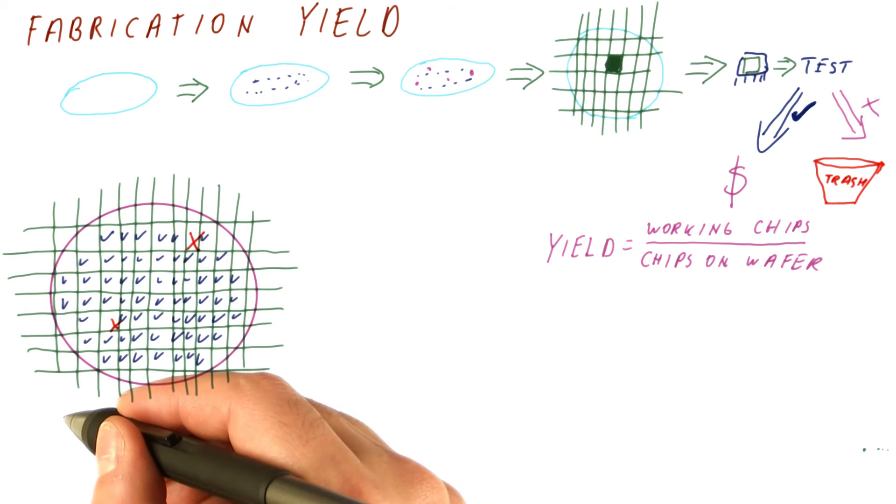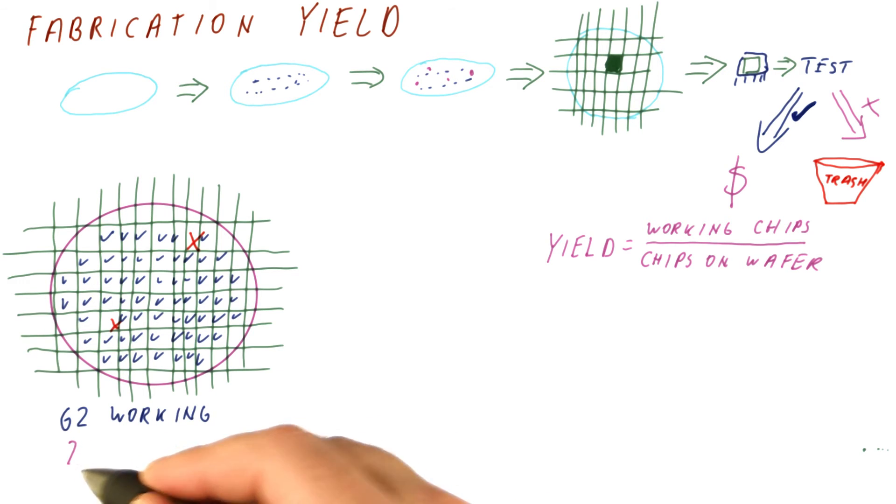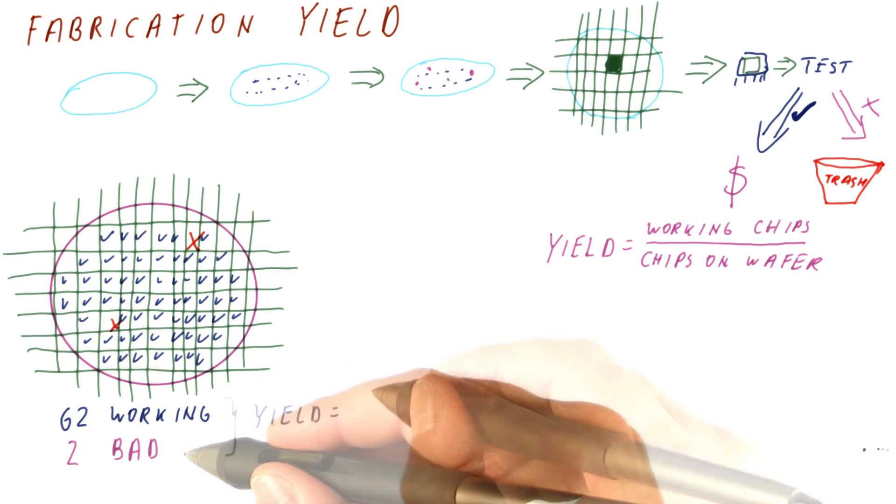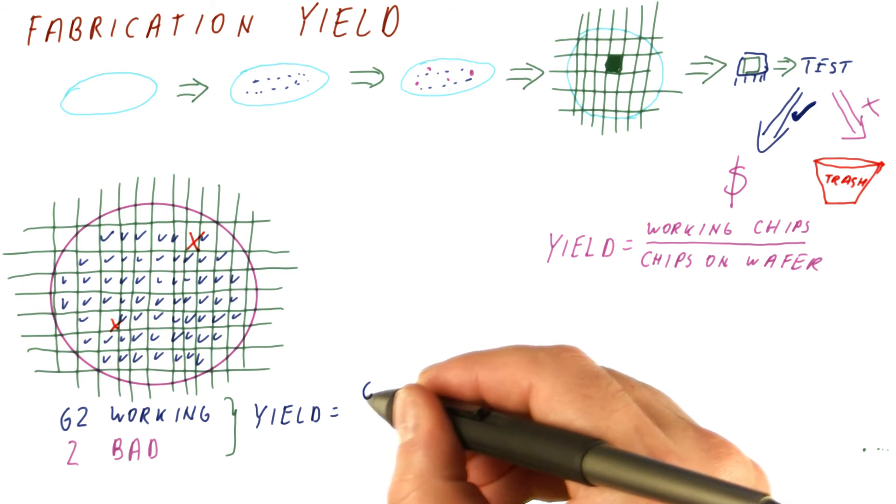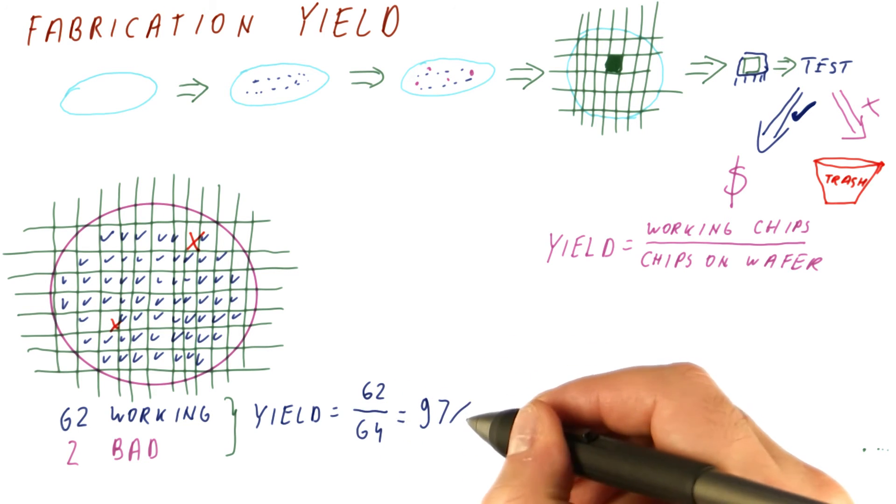This is a good chip. So we got 62 working chips and two bad chips. So our yield is 62 out of 64, which is about 97%.